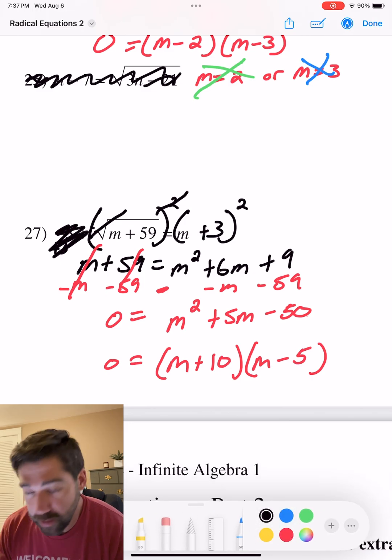But let's solve it. Remember, it's just the opposite. m equals negative 10 or m equals positive 5.